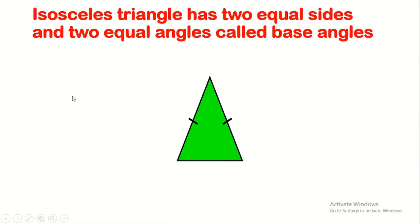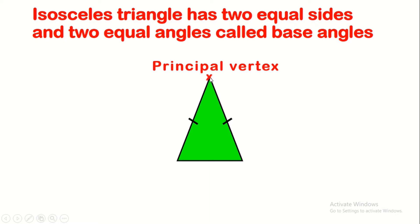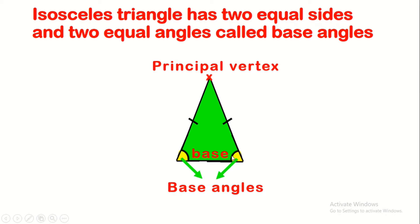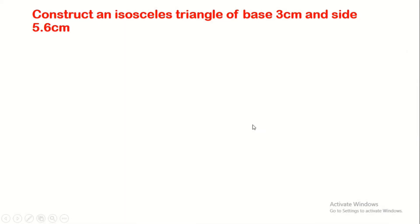The second type of triangle is the isosceles triangle. Isosceles triangles have two equal sides and two equal angles called base angles. The vertex from which these two equal sides are issued is called the principal vertex. For example, if it is isosceles at A, then A is the principal vertex. At the base, the two angles are equal — they have the same measure. We call them the base angles.